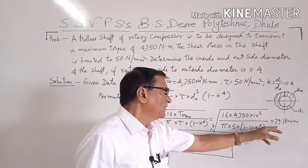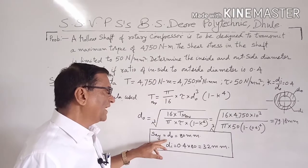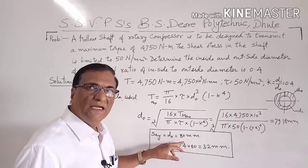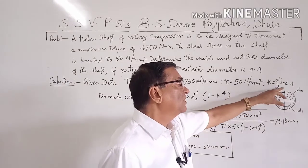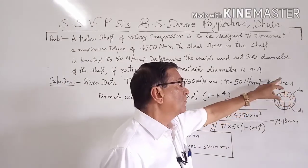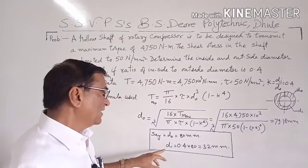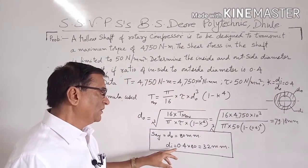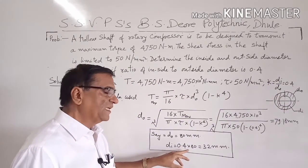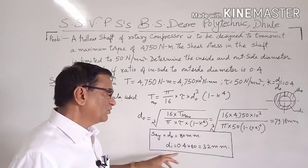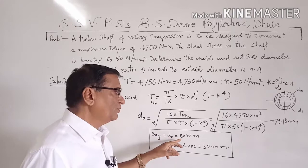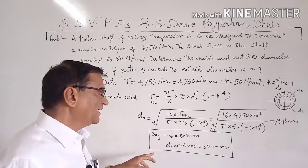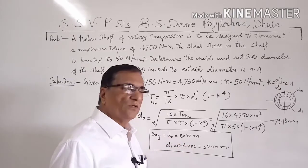We will take the value of outside diameter equal to 80 millimeters. As we have given the ratio of D₁ upon D₀ is equal to 0.4, from this we will calculate the inside diameter. That is 0.4 multiplied by 80, which comes out to be 32 millimeters. So outside diameter is 80 millimeters and inside diameter is 32 millimeters.